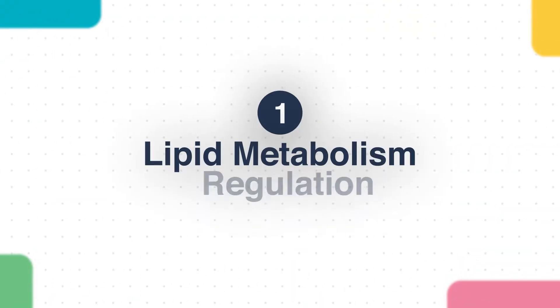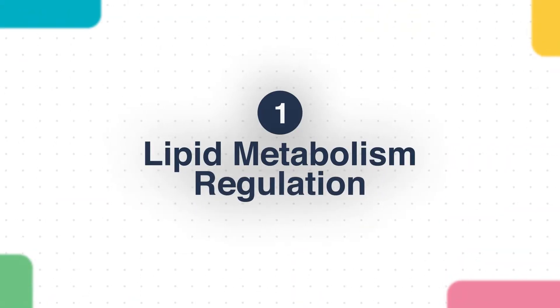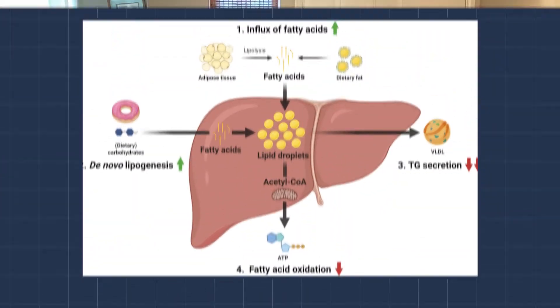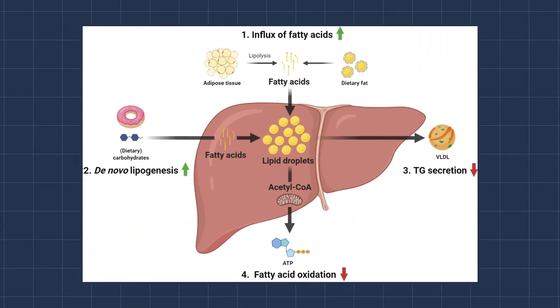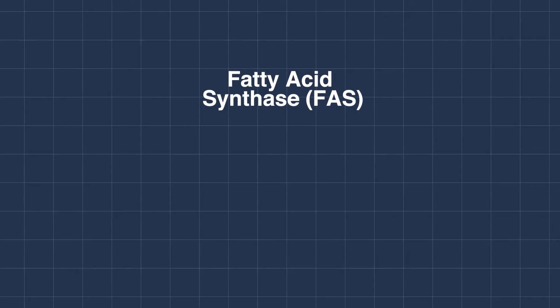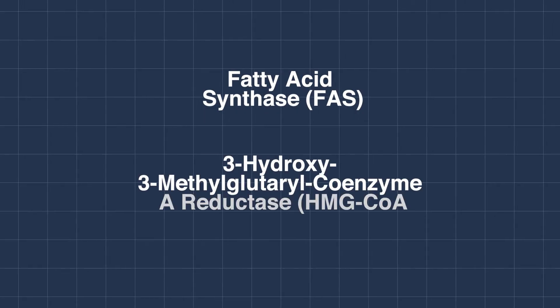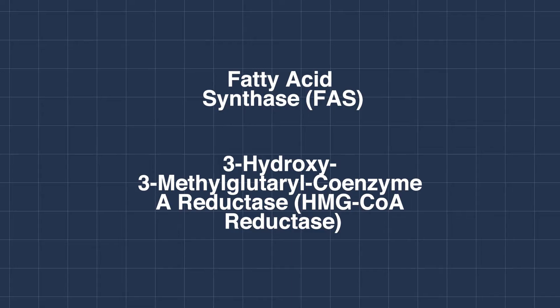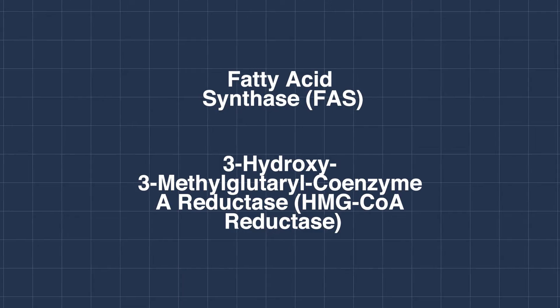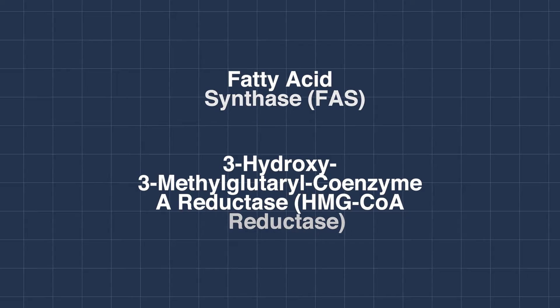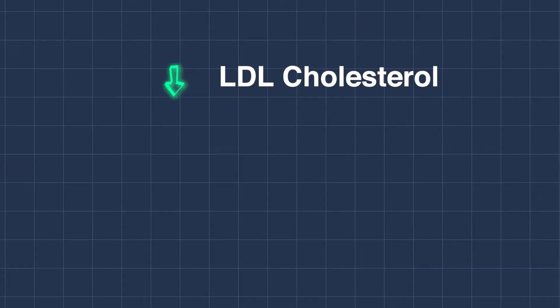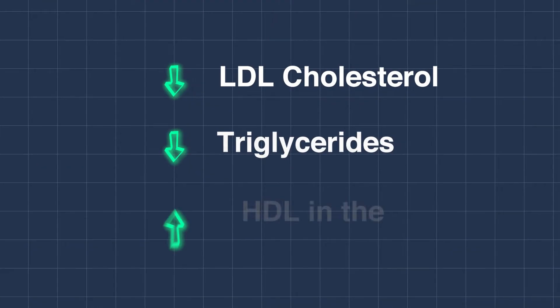For liver metabolism, number one is lipid metabolism regulation. Berberine has been shown to regulate lipid metabolism in the liver. It can inhibit the activity of enzymes involved in lipid synthesis, such as fatty acid synthase (FAS) and HMG-CoA reductase. By doing so, berberine helps reduce the synthesis of cholesterol and triglycerides, leading to lower levels of LDL cholesterol and triglycerides.